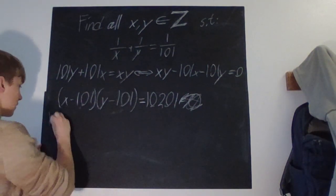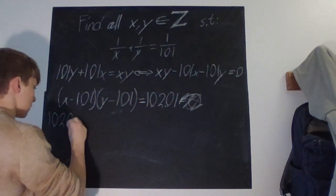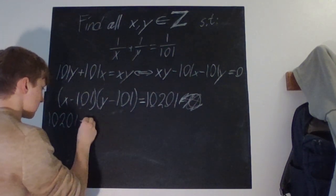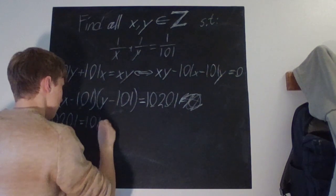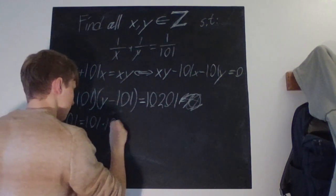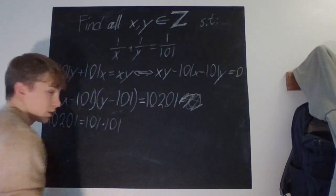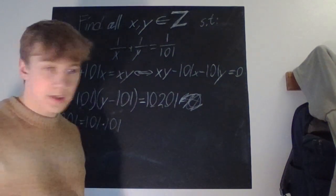We can just start by saying that, well, okay, 10201. It is, as we said before, it is 101 times 101. Is 101 a prime number? Yes, it is.